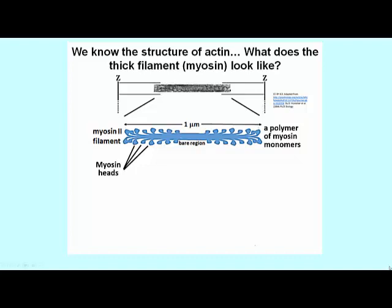This is what myosin looks like in a skeletal muscle cell. There's a bare region, and then projecting in both directions from that bare region are myosin monomers with their heads projecting away from or out of the filament itself.